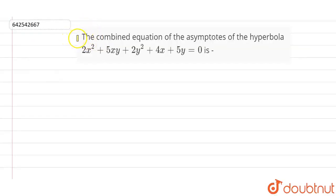Okay, so the question here we have is the combined equation of the asymptotes of the hyperbola. This is the given equation of hyperbola we have, and we have to find the combined equation of asymptotes, right?